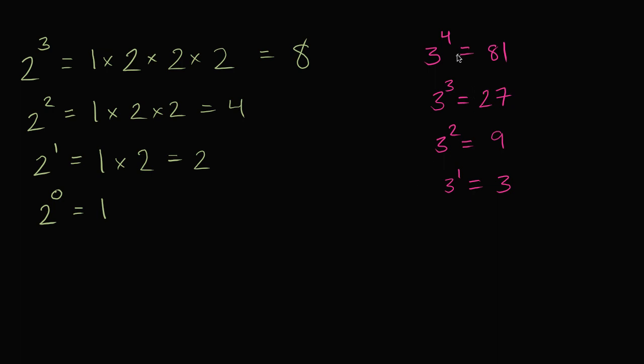Do you notice a pattern every time we decrease the exponent here by 1? So we went from 3 to the 4th to 3 to the 3rd. What happened to the value? Well, going from 81 to 27, we divided by 3. And that makes sense because we're multiplying by one less 3. So we divide by 3 to go from 81 to 27. We divide by 3 again if our exponent goes down by 1. And we divide by 3 again going from 9 to 3.